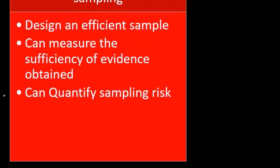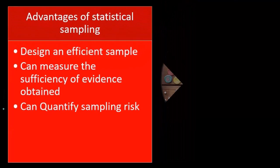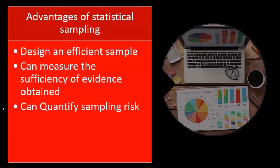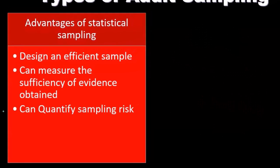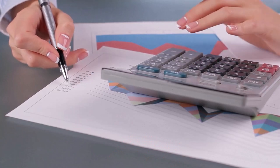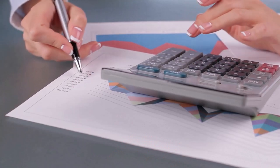More specific types of calculations can quantify sampling risk, so we can actually put a number to the sampling risk. This is a key advantage over non-statistical sampling, where we would basically set the risk at certain levels, do our sample, and see if that correlates.